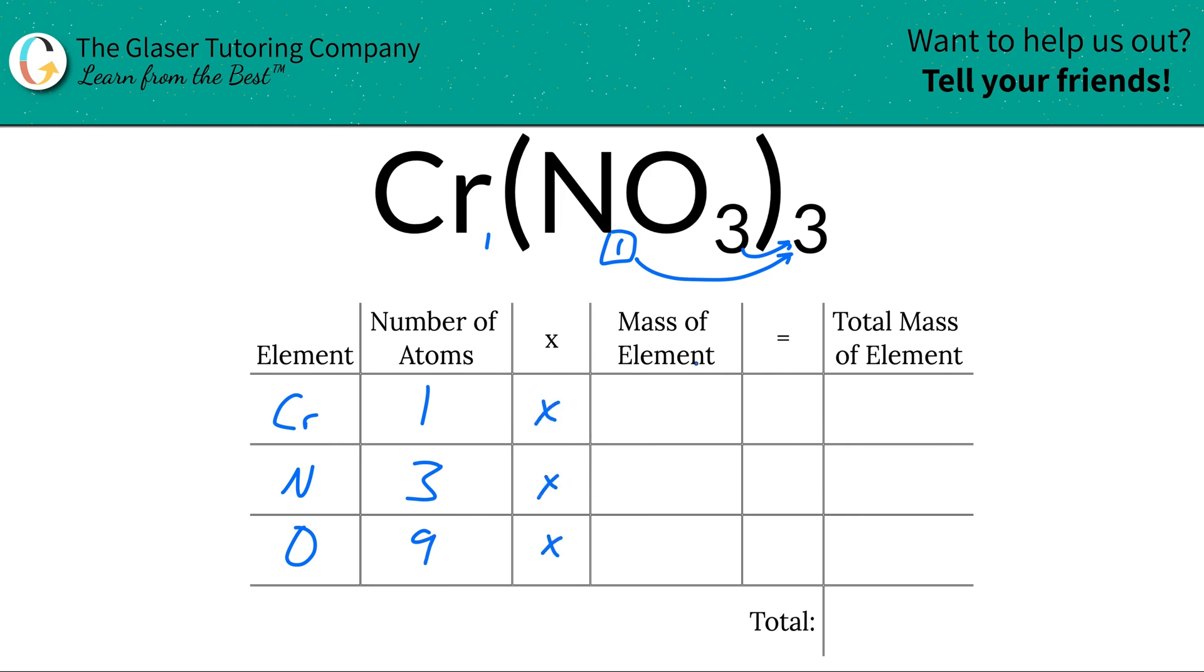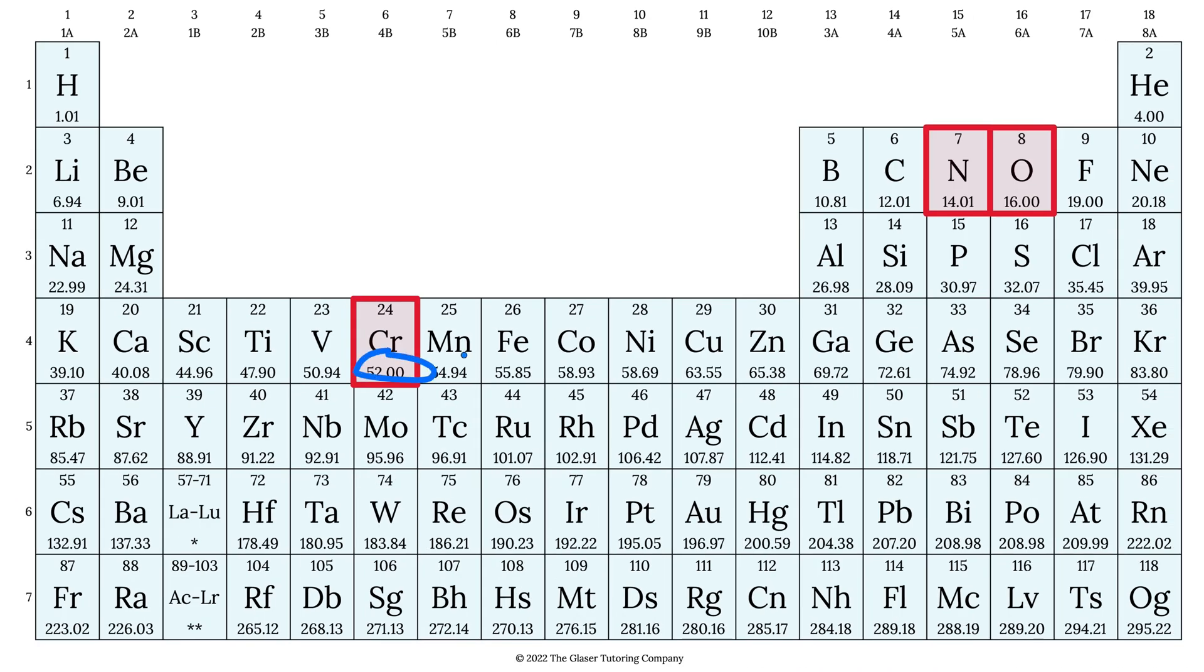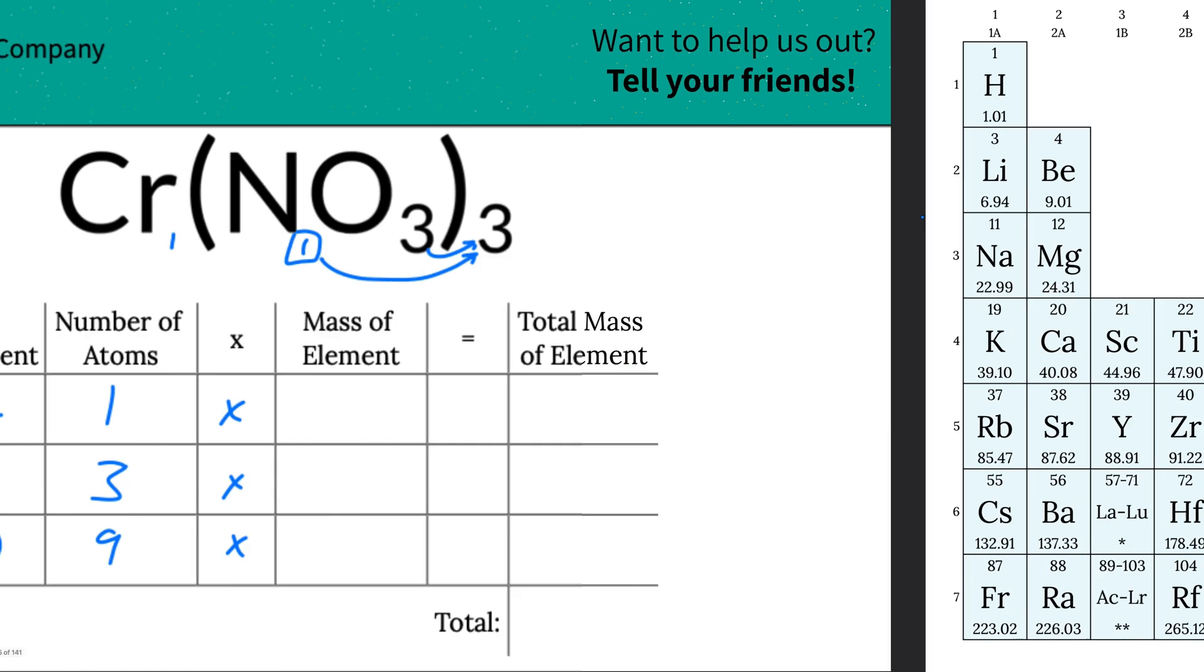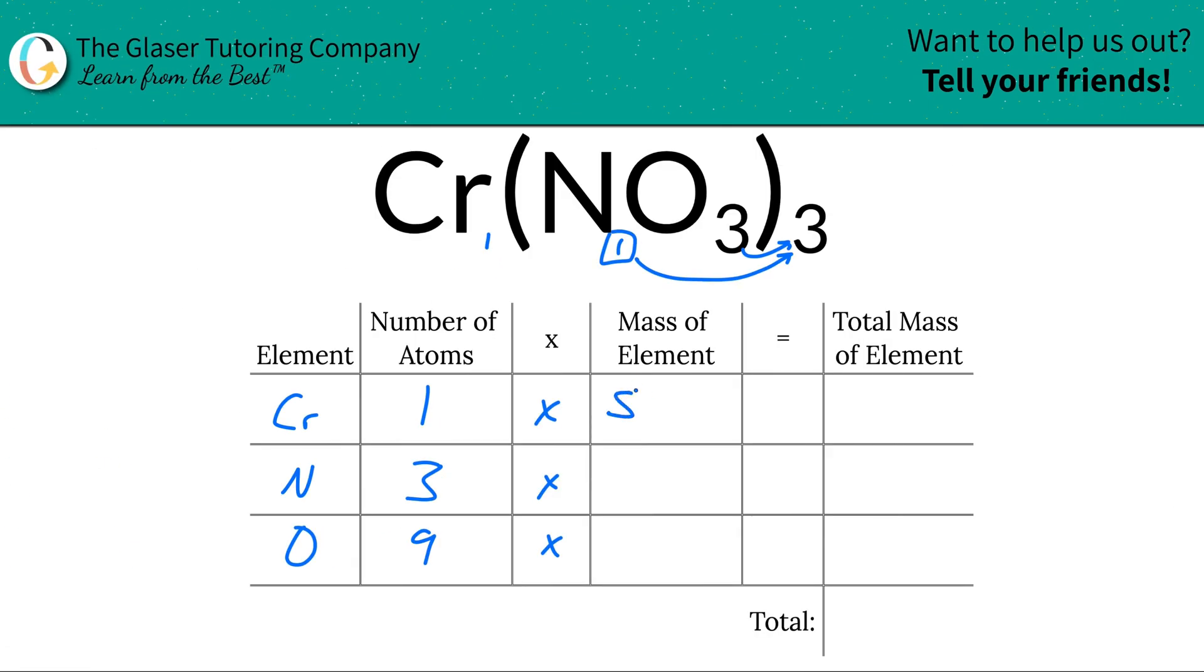Then all we have to do is take those numbers of atoms and multiply them by the mass of each particular element. Where do we find the mass? We find it on the periodic table. Let's take a look. There it is, chromium 52, nitrogen 14.01, and oxygen is 16, so we're going to write in those masses. So chromium here is about 52, nitrogen is about 14.01, and oxygen is going to be 16.